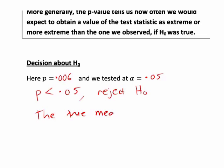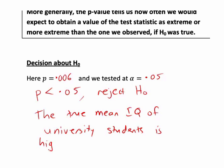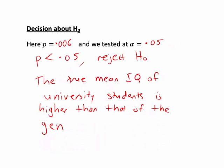So finishing with a written conclusion: we conclude that the true mean IQ of university students is higher than that of the general adult population. That is an example demonstrating not just how we conduct the hypothesis test, but the background to the meaning of the test statistic and the p-value.